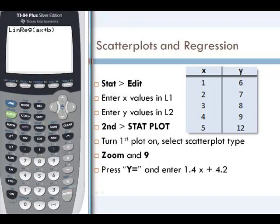Linear regression takes L1 as x values and L2 as y values by default, and since that's what we have, we'll press enter. This gives us y = 1.4x + 4.2.